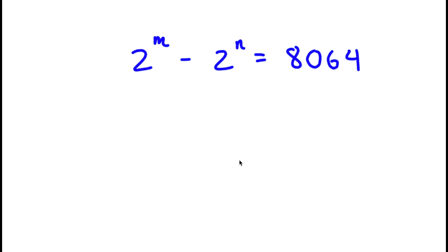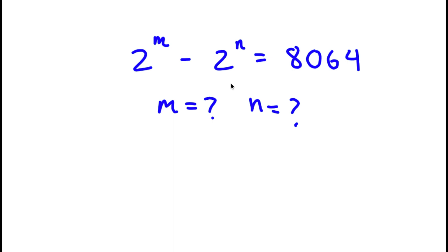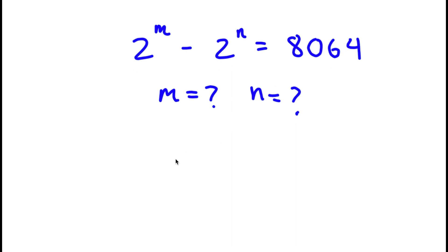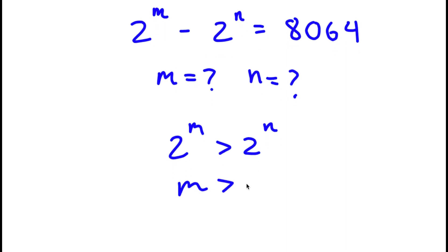In this equation, I have 2 to the power of m minus 2 to the power of n is equal to 8,064. I want to find the value of m and n. Because this is positive, we know that 2 to the power of m is greater than 2 to the power of n, meaning that m is greater than n because both of these have the same base.